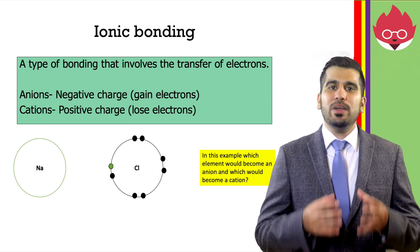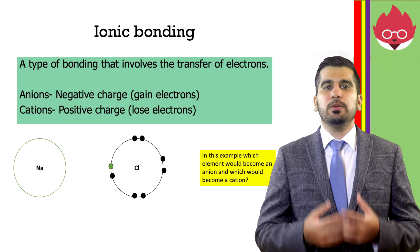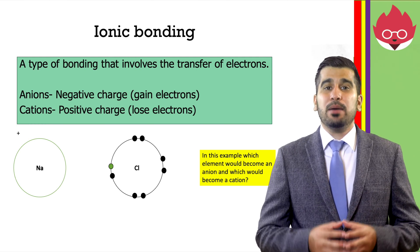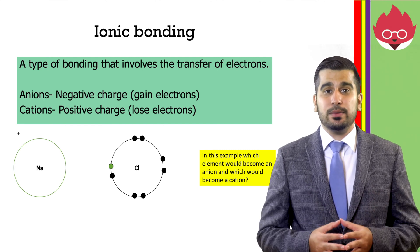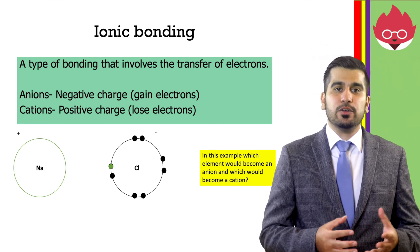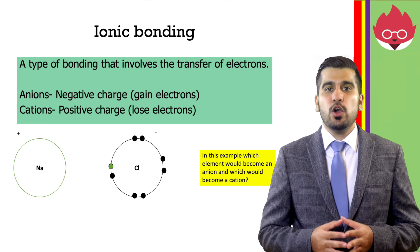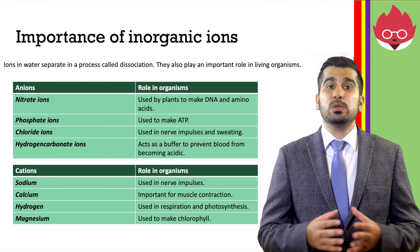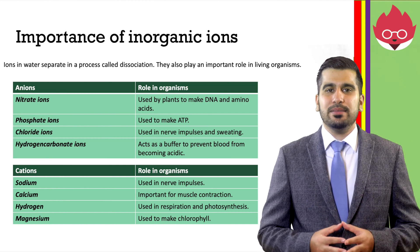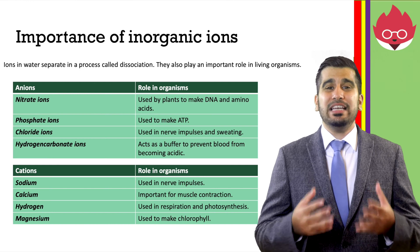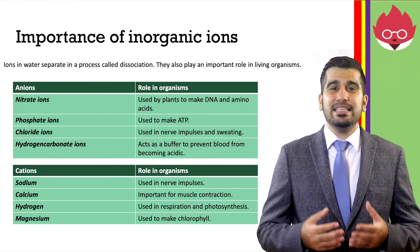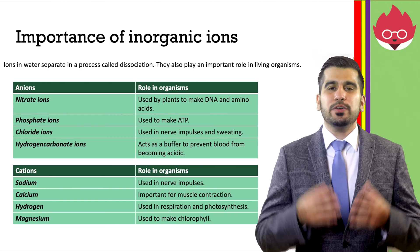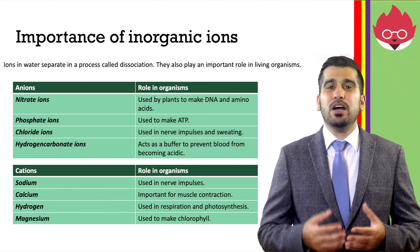In this example, which element would become an anion and which would become a cation? Sodium loses an electron, becoming positively charged, we call it a cation. Chlorine gains an electron, becoming negatively charged, we call it an anion. Ions can separate in water in a process called dissociation, which we'll look at later. They also play an important role in living organisms. Here's a list of different anions and cations and their roles in organisms. During your A-level studies, you will cover all of them.